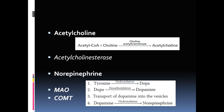Norepinephrine is also synthesized at the terminal buttons from tyrosine. Hydroxylation of tyrosine gives DOPA; decarboxylation of DOPA gives dopamine. Dopamine is transported into vesicles, where its hydroxylation gives norepinephrine. If norepinephrine gets methylated, it becomes epinephrine.